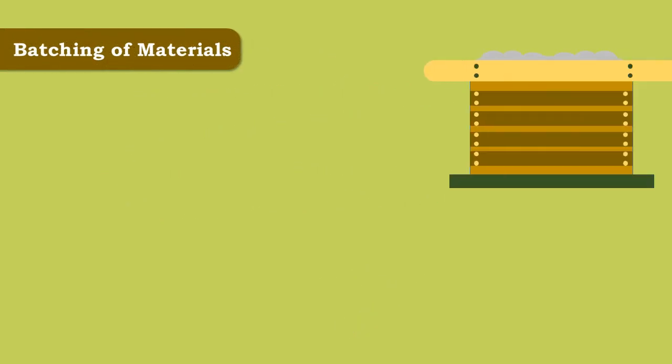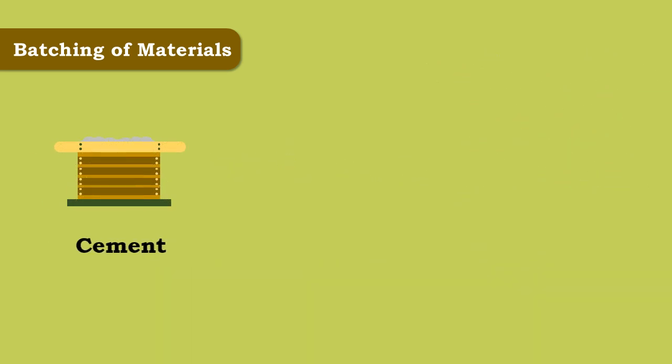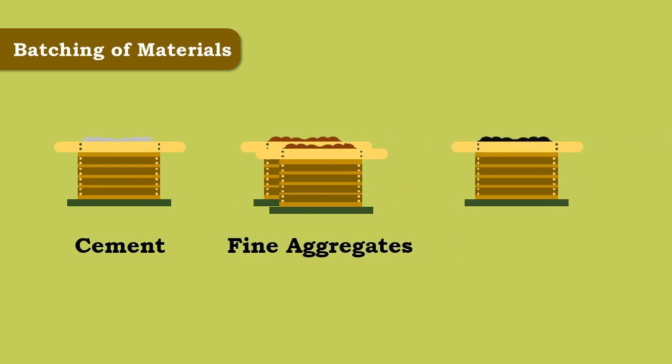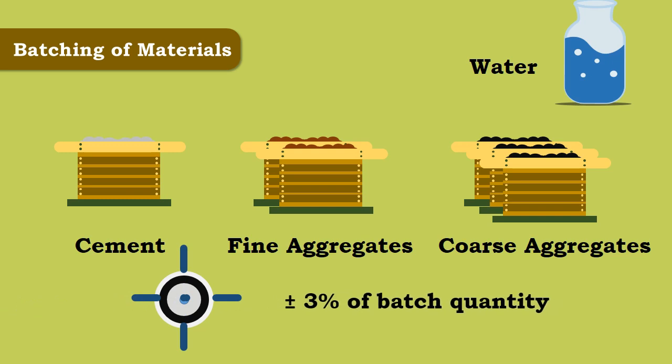The first process in manufacture of concrete is batching of materials. Once the grades of concrete are known, the quantities of materials should be batched accordingly. The required quantities of cement, fine aggregates, coarse aggregates and water are measured with an accuracy of plus or minus 3% of batch quantity.